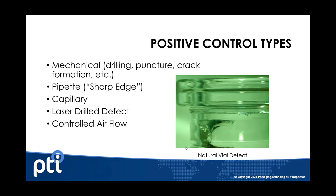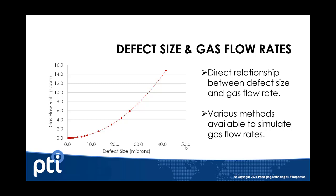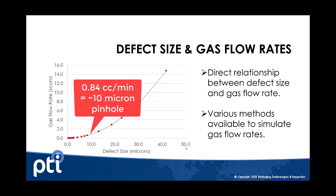If we have to create defects that are smaller than 10 microns, there are certainly other ways that we can simulate or create that effect. A pipette is one way, constricting the flow similar to the capillary. More common methods include a laser drilled defect, which is a certified type defect, or you can introduce a flow meter to simulate the leak. A defect size is correlated to a gas flow rate, so for a vacuum-based leak test method, a 0.84 cc per minute flow rate can simulate a 10 micron defect.